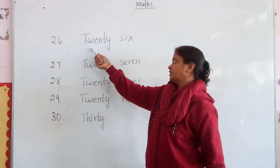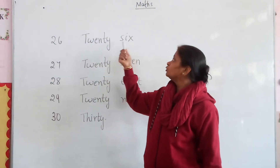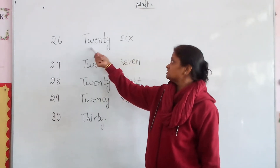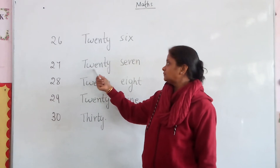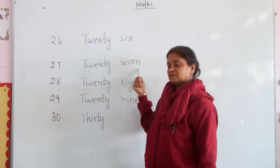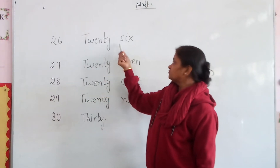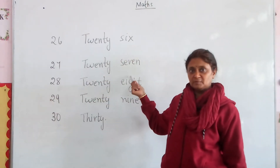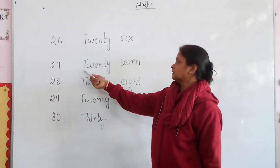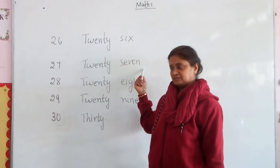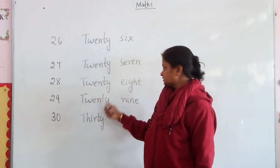So 26 is twenty-six — 20 and 6. So this is 26. Right? So this is 27. Now 28 is twenty-eight.